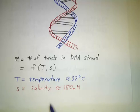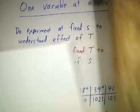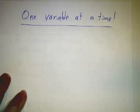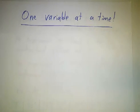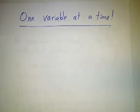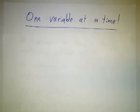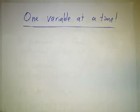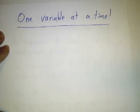How can we study the twistiness as a function of these two variables? And the basic idea is one variable at a time. You're not going to measure things at one temperature and one salinity and then measure it at a completely different temperature and a completely different salinity. You always hold all of your variables fixed except the one you're studying.